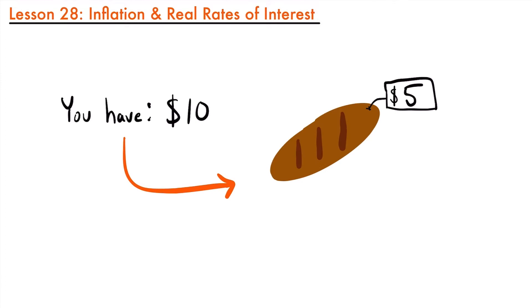For example, let's say you had $10 and you wanted to buy bread that costs $5 per loaf. With that $10, you could purchase two loaves of bread — each bread is $5, and five plus five is ten. But let's say that over time, the price of the bread increases to be $1 greater.